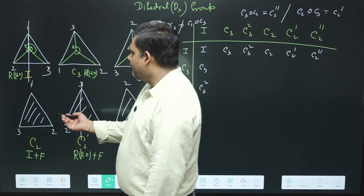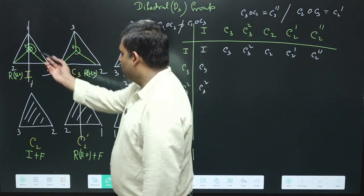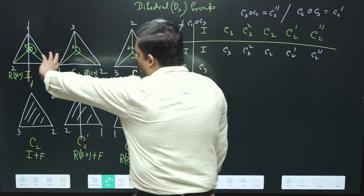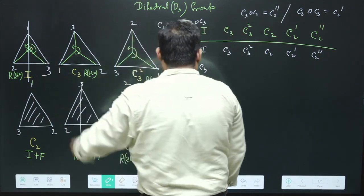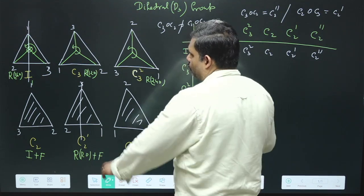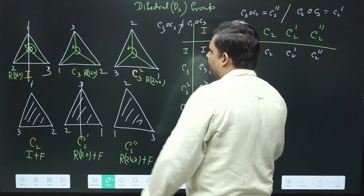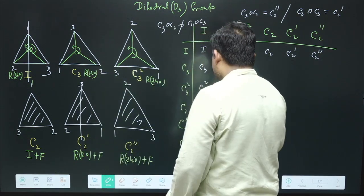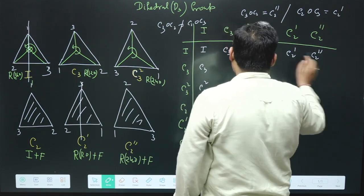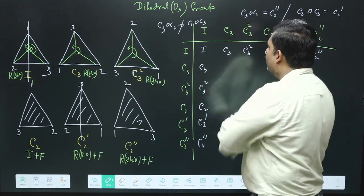For the identity row entries involving flip elements: C2 composed with identity means rotating 360 degrees then flipping — you get C2. C2' composed with identity similarly returns C2'. This confirms the identity column and row are fully trivial. Now let us fill more interesting entries.